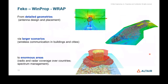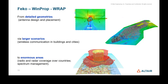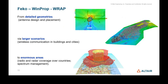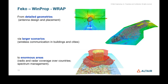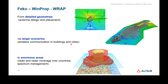Looking at the broader picture: PICO is used for very detailed geometries; for larger scenarios like wireless communications in buildings and cities, WinProp is used; and for enormous areas, RAP is used. Think of it as a step-by-step progression — higher resolution requires more computational resources; WinProp offers less resolution but covers larger areas; RAP covers even bigger areas with less resolution but much greater geographic scope.